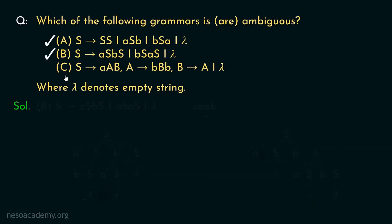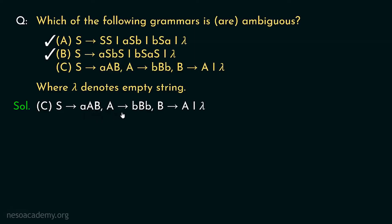Now let's try grammar C. The rules are: S → small-a, capital-A, capital-B; A → small-b, capital-B, small-b; and B → capital-A or lambda. Let's see what happens when we try to derive the string 'a' followed by four b's.